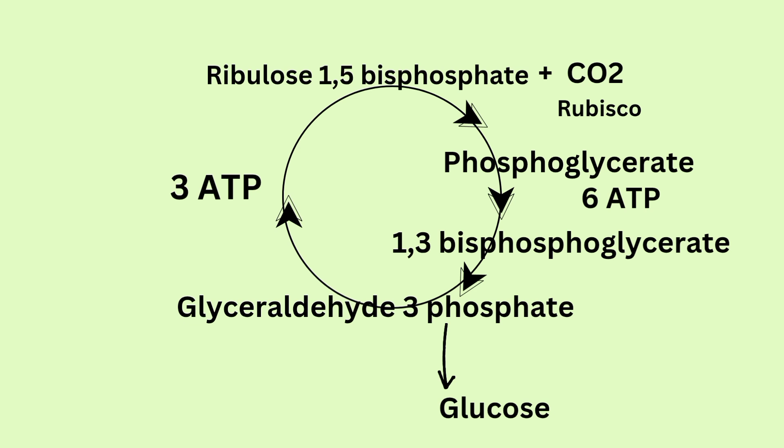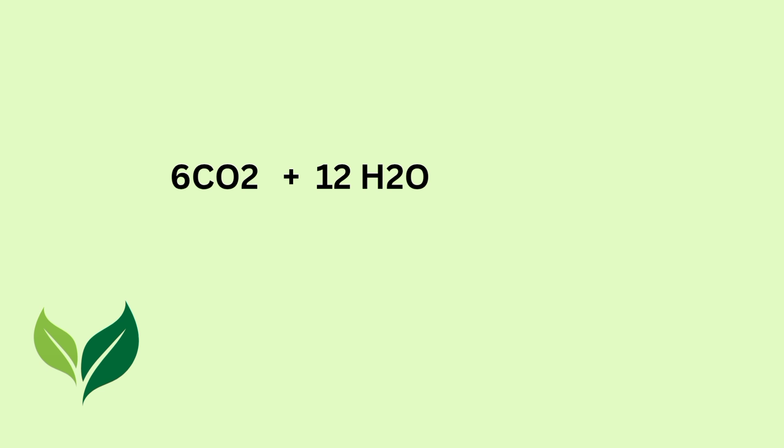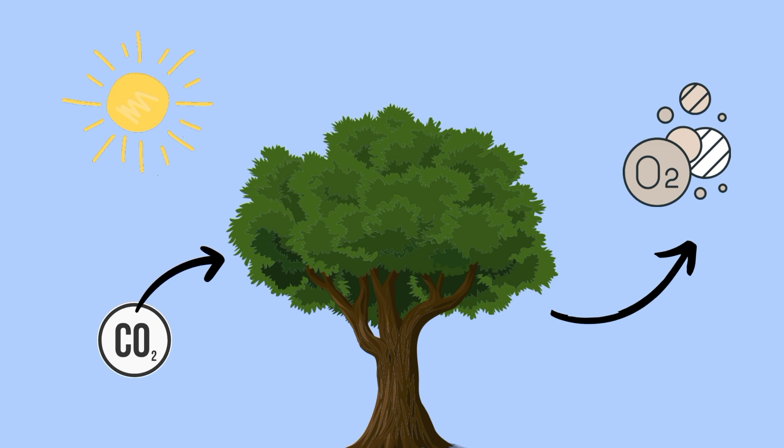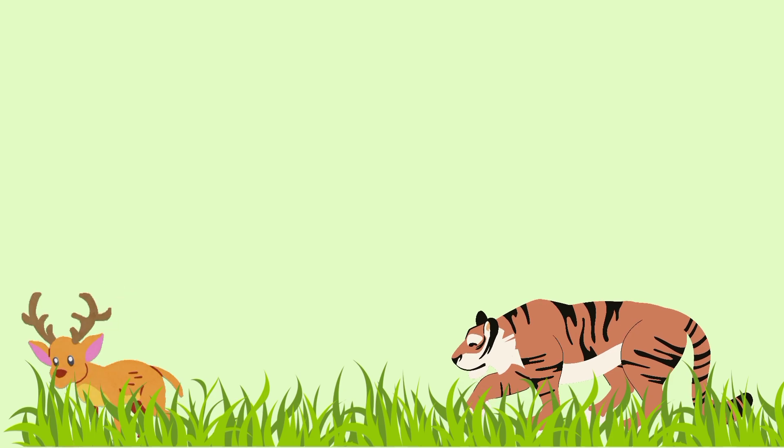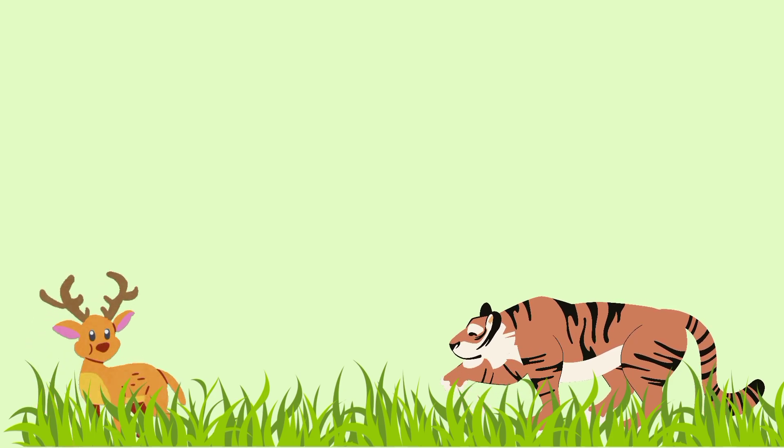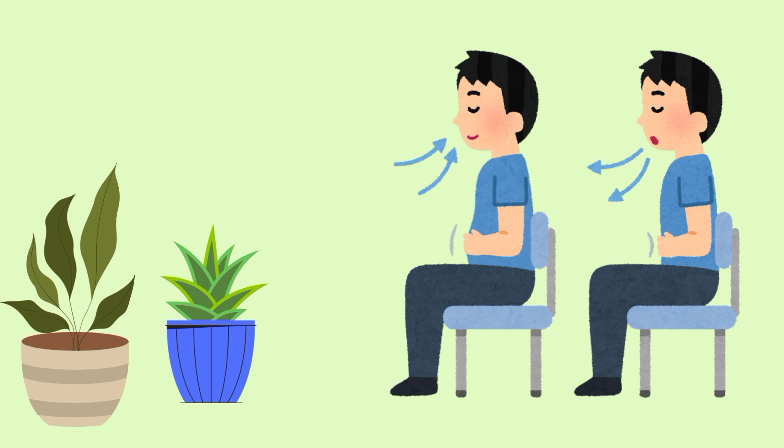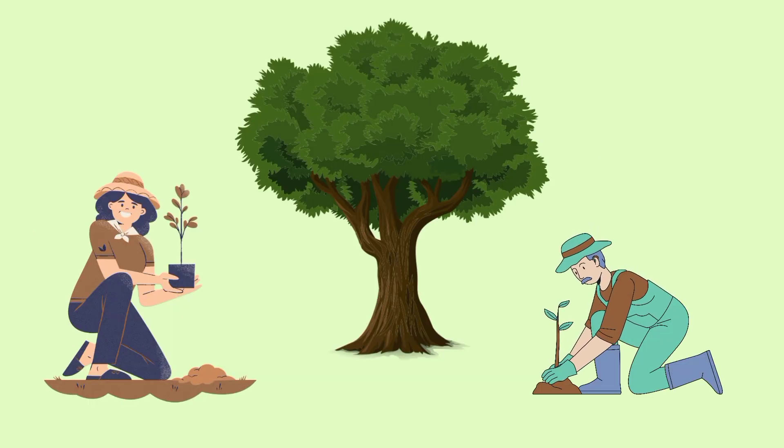The entire process can be summarized with the equation. Carbon dioxide plus water gives carbohydrate plus oxygen. The equation shows how, through photosynthesis, plants play a vital role on earth. They not only produce food, but also release oxygen, which sustains all life. Let's do our part to protect them. Thank you.